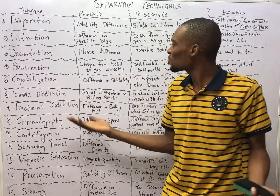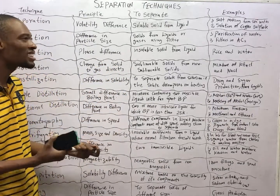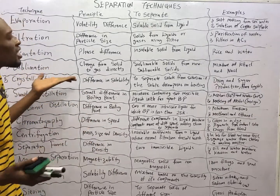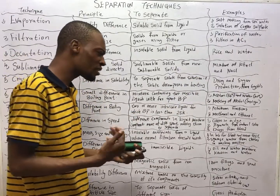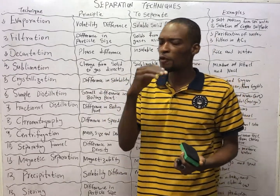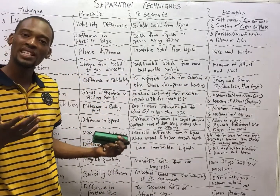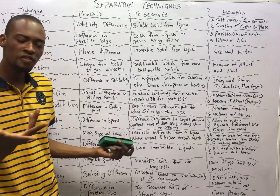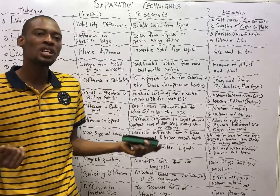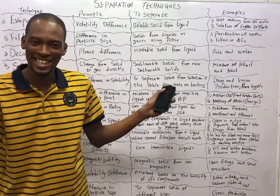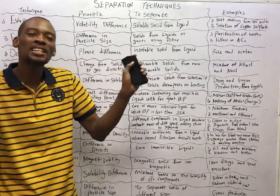Sublimation works on the principle that substances can change from solid to gas directly without passing through the liquid state. Take a look at camphor — put camphor inside your clothes, and after some time, when you open the box, you find it has become smaller or completely gone, yet the clothes are not wet. So it vanished — from the solid state it goes to the gaseous state without passing through the liquid state. That is sublimation.